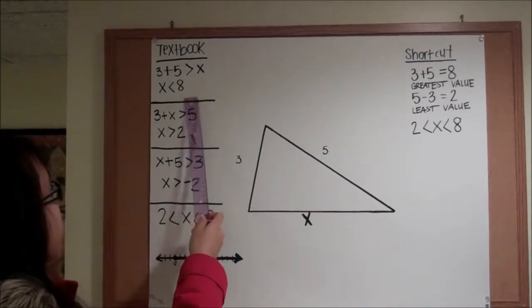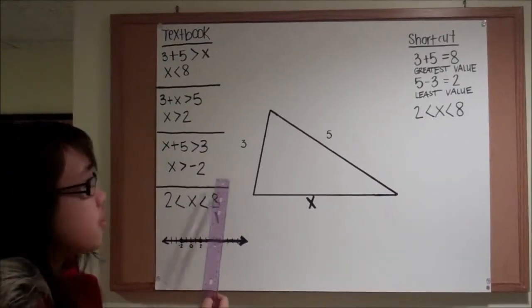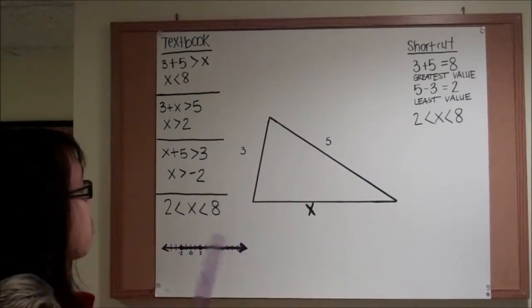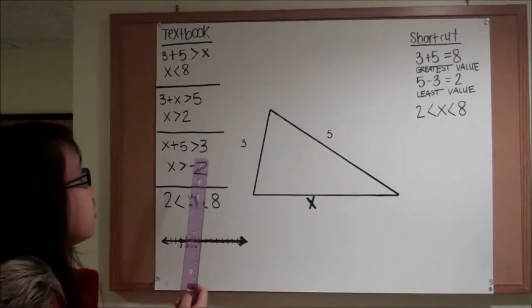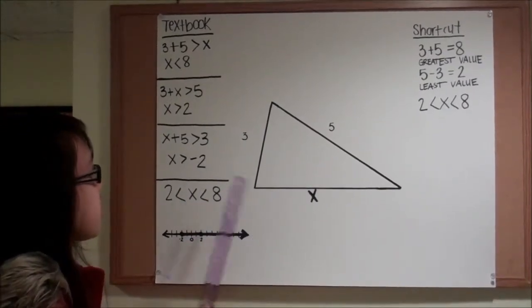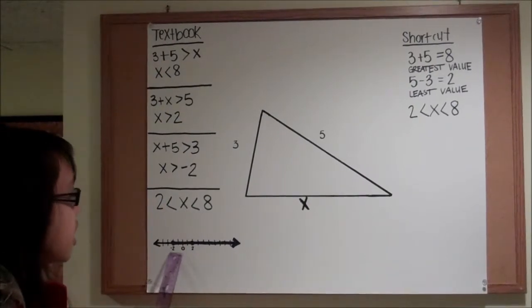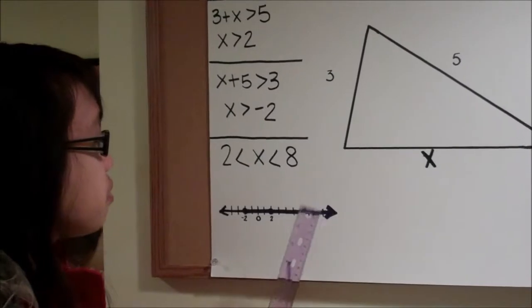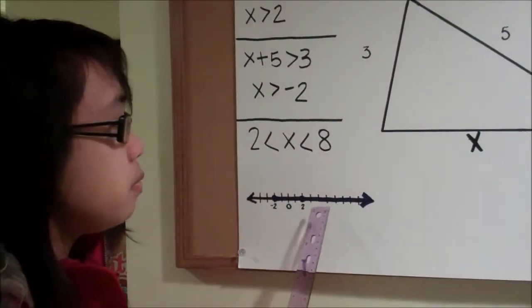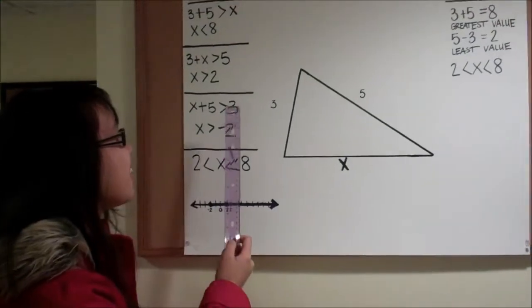This would obviously be the greater value, so that would go down here. But to choose between these two, you have to figure out which one makes the other one true. In this case, if X is greater than 2, it's also greater than negative 2, so you would pick 2. And it shows here on the number line. Since any value that's greater than 2 is also greater than negative 2, you would just pick 2.